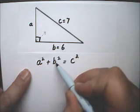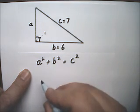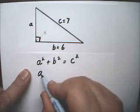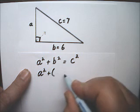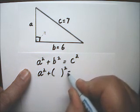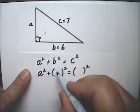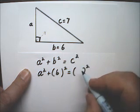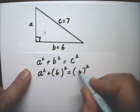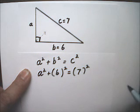I'm going to be substituting 6 for B and 7 for C. So getting this ready for substitution. And now I'll put a 6 in for the B, and a 7 in for the C.